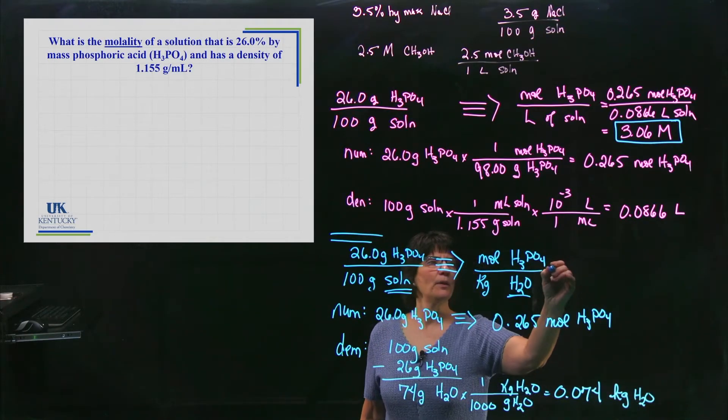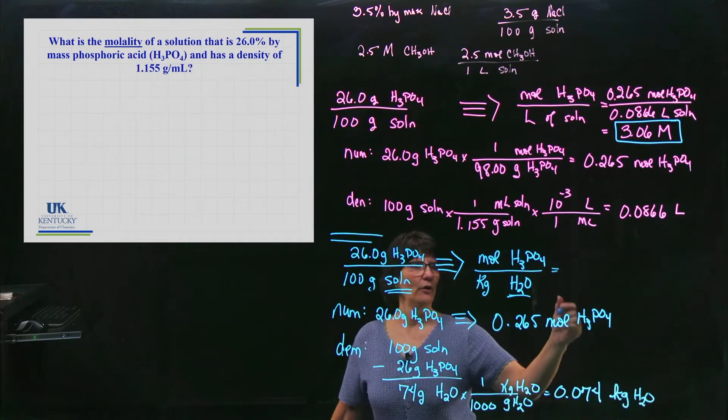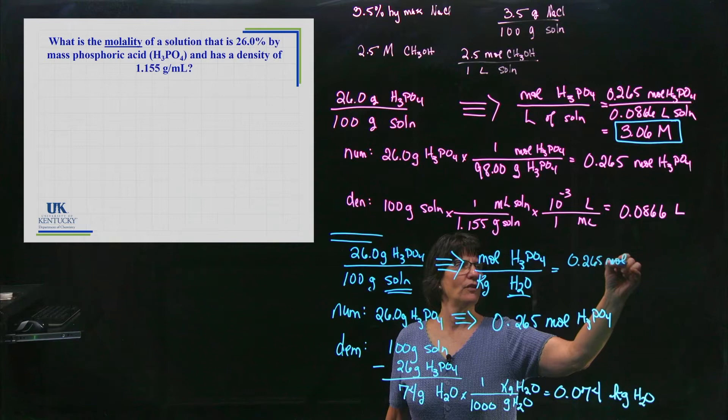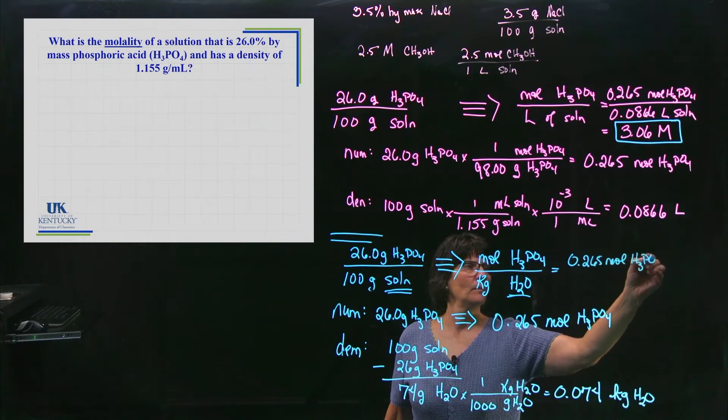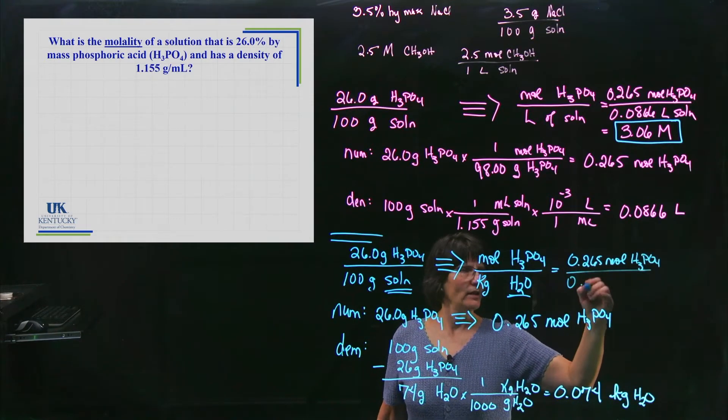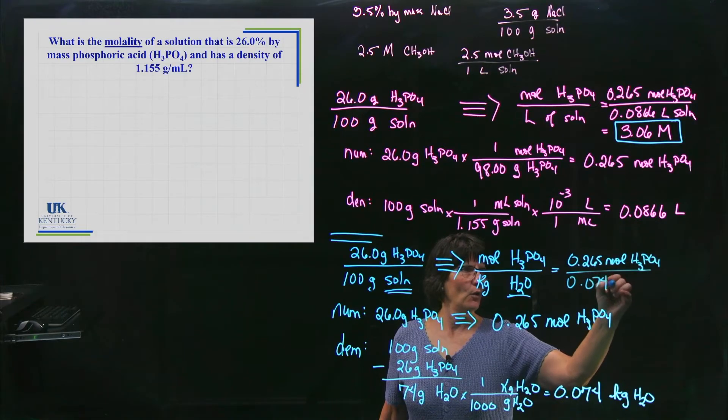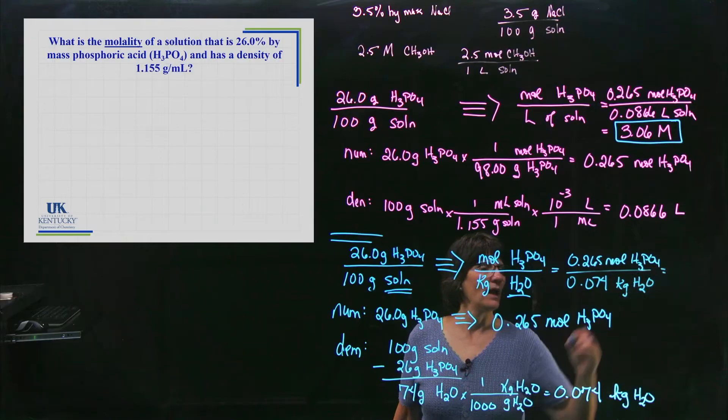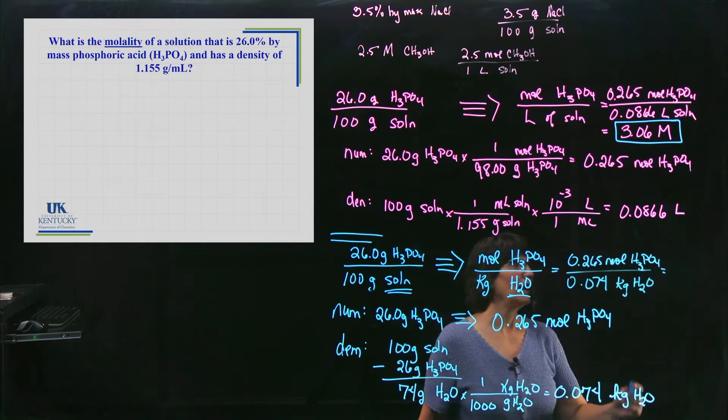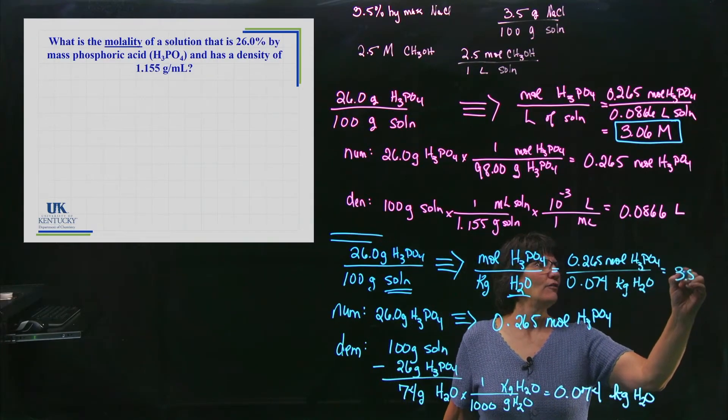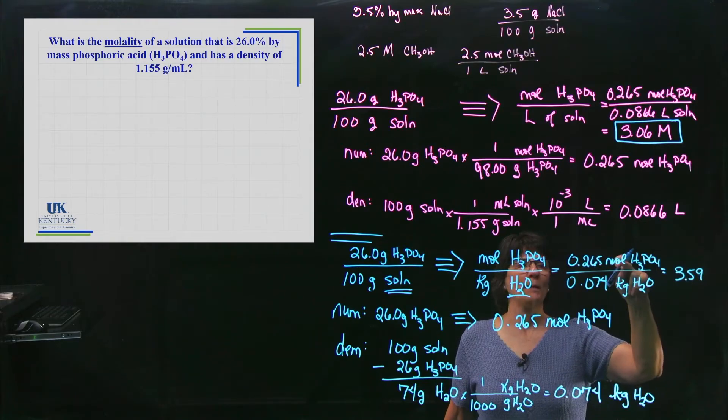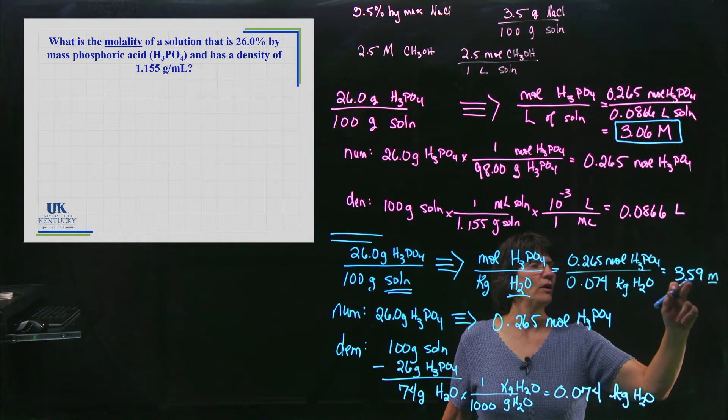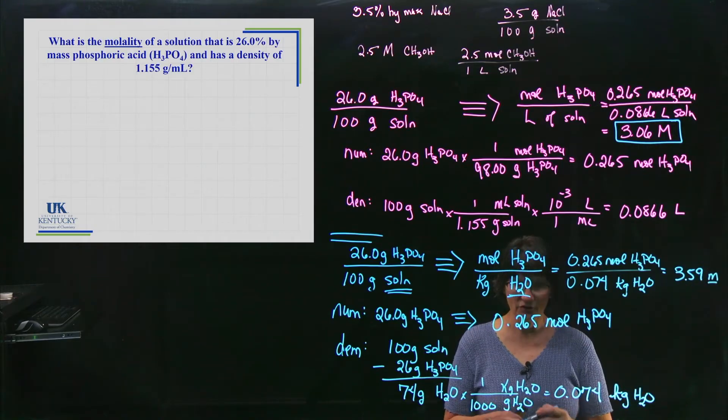Then I'm ready to plug those values in. I work my numerator. I have 0.265 moles of phosphoric acid. I have my denominator, 0.074 kilograms of water. And when I divide those two values, I get 3.59. We could write moles per kilogram or we can put a little m. It's a 3.59 molal solution.